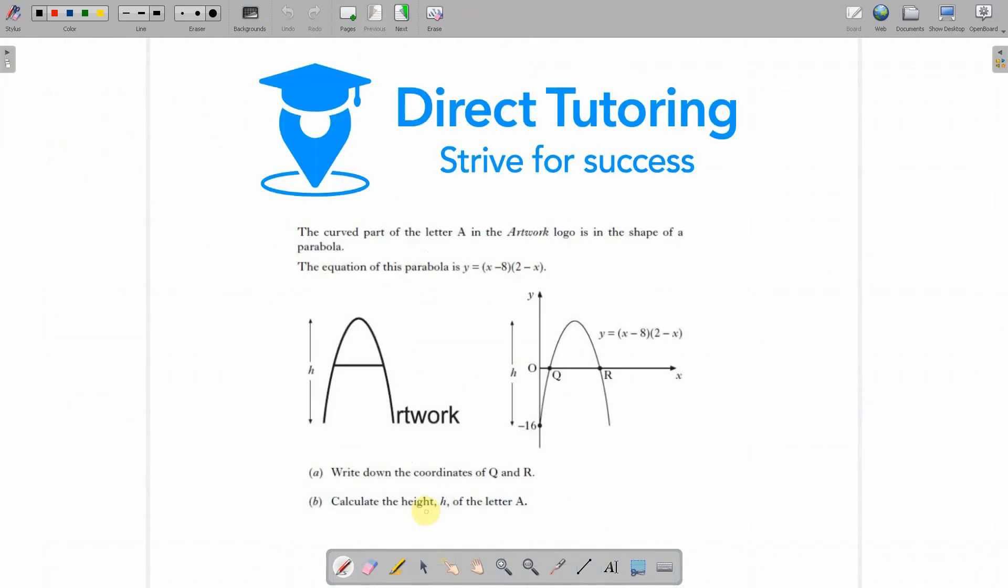Part B now asks you to calculate the height of the letter. So the height is, now this is minus 16, so from there to there is 16. However, we need to find this point here. So we need this value of y, and then we add that on to the 16. And thankfully this is the turning point.